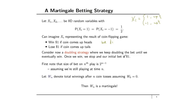The size of the bet on the nth play is 2 to the n minus 1. On the first play, we bet $1, which equals 2 to the 0. On the second play, we bet $2, equal to 2 to the 1. On the third play, we bet $4, equal to 2 squared, and so on. So the size of the bet on the nth play is 2^(n-1), assuming we're still playing at time n — meaning we haven't yet won a game up to that point. Let Wn denote the total winnings after n coin tosses, starting with W0 = 0. We're going to show that Wn is a martingale.